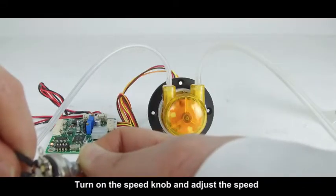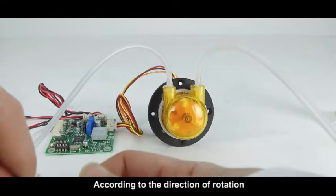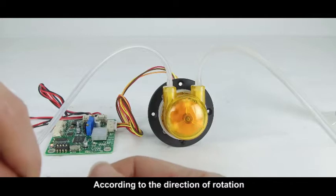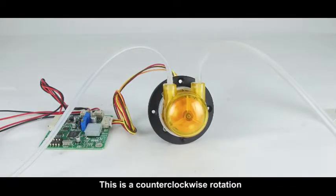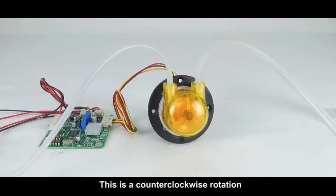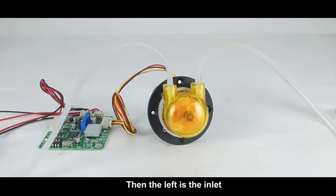Turn on the speed knob and adjust the speed. According to the direction of rotation, you can determine the pump tube inlet and outlet. This is counter-clockwise rotation. Then the left is the inlet.